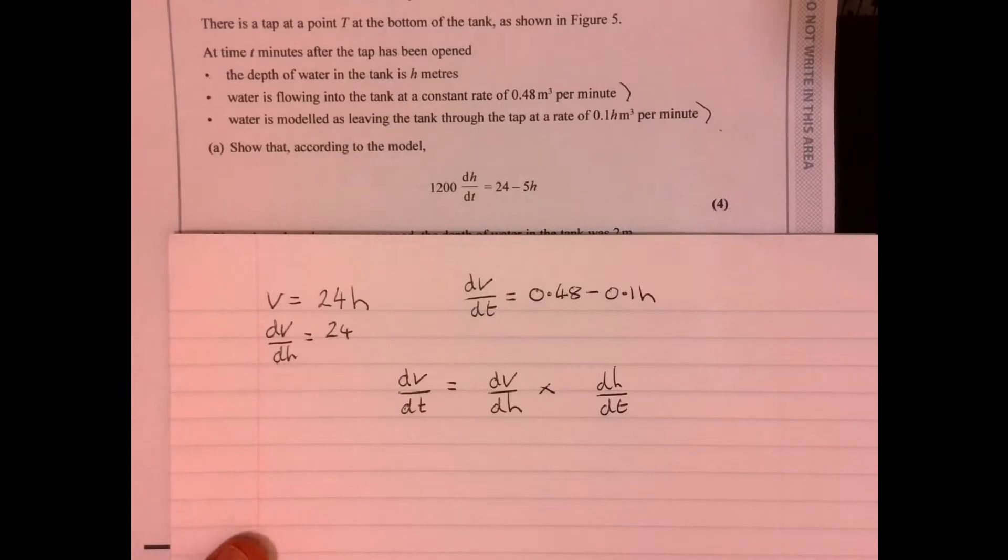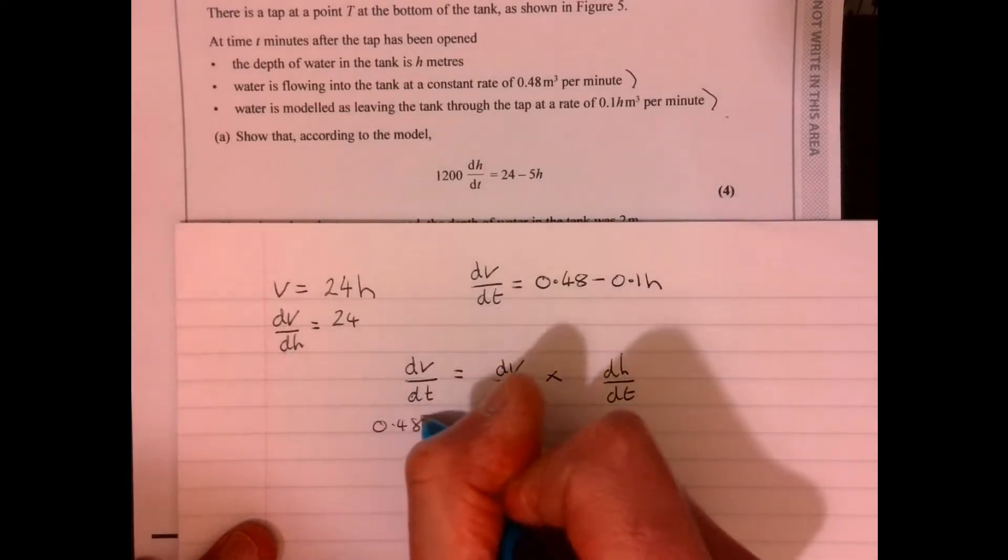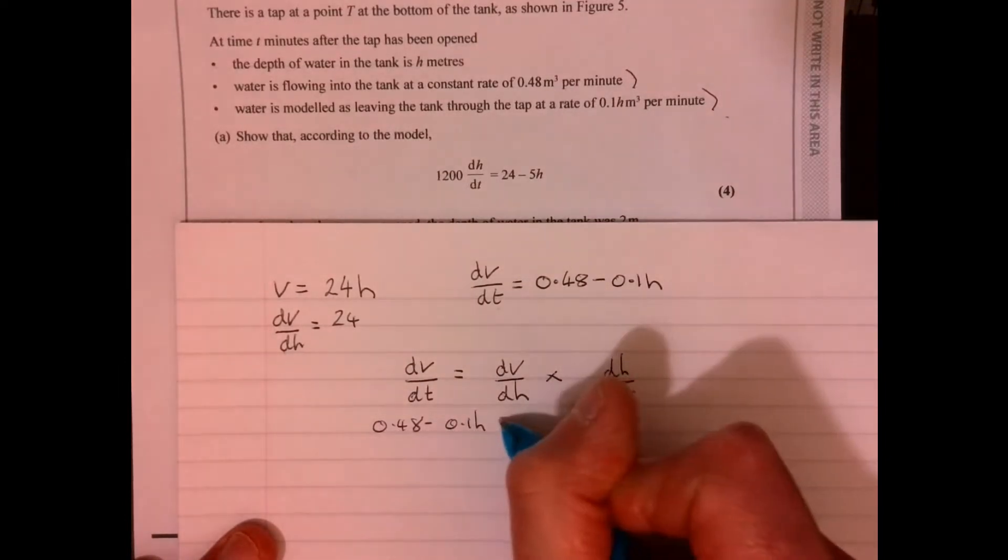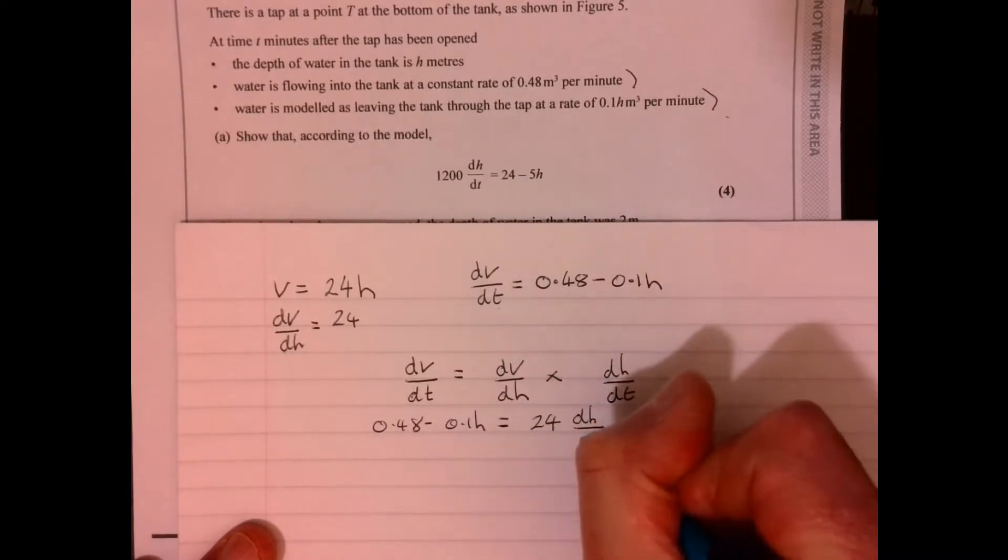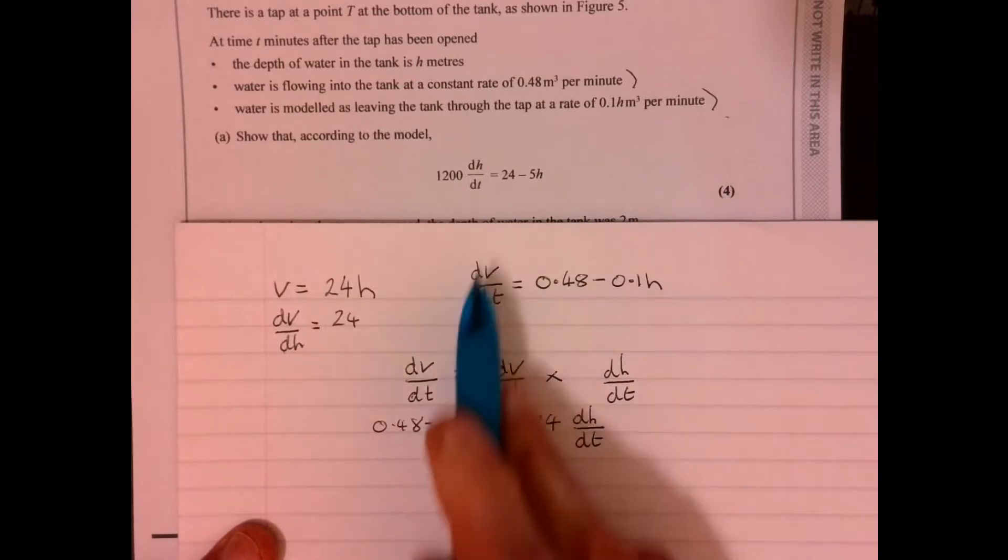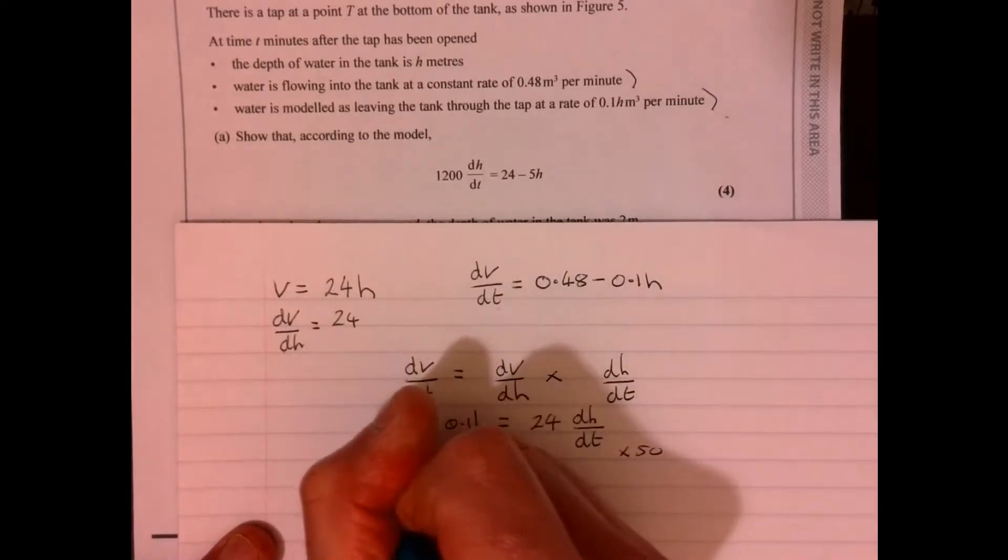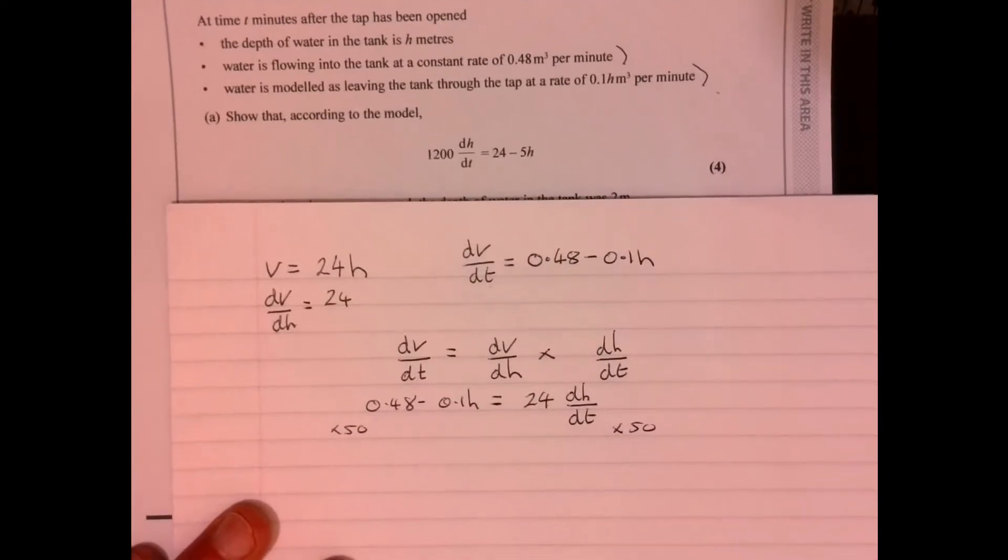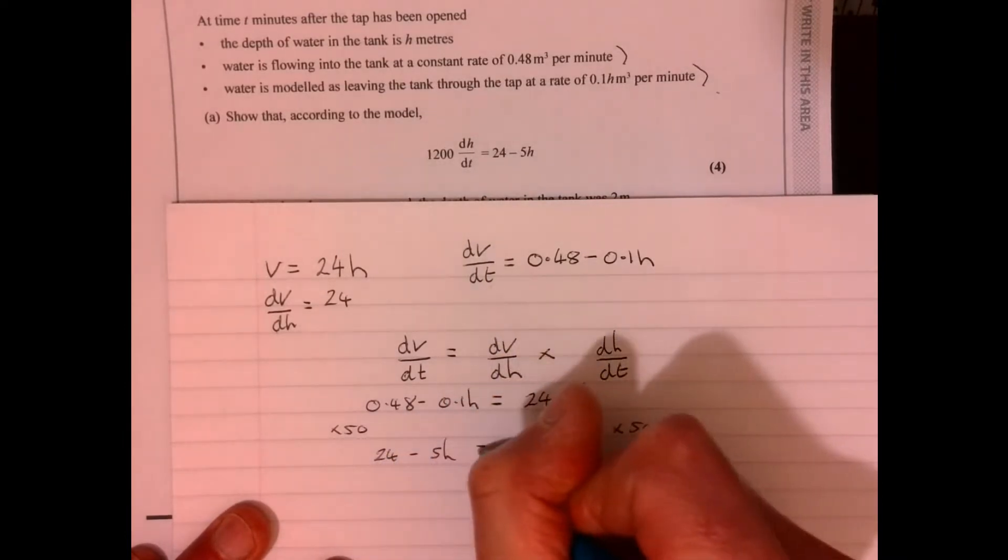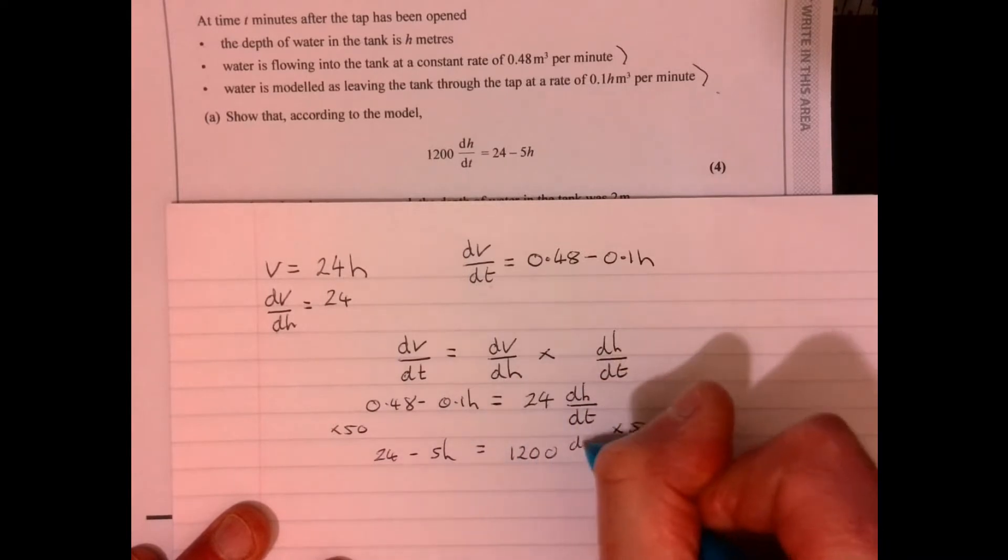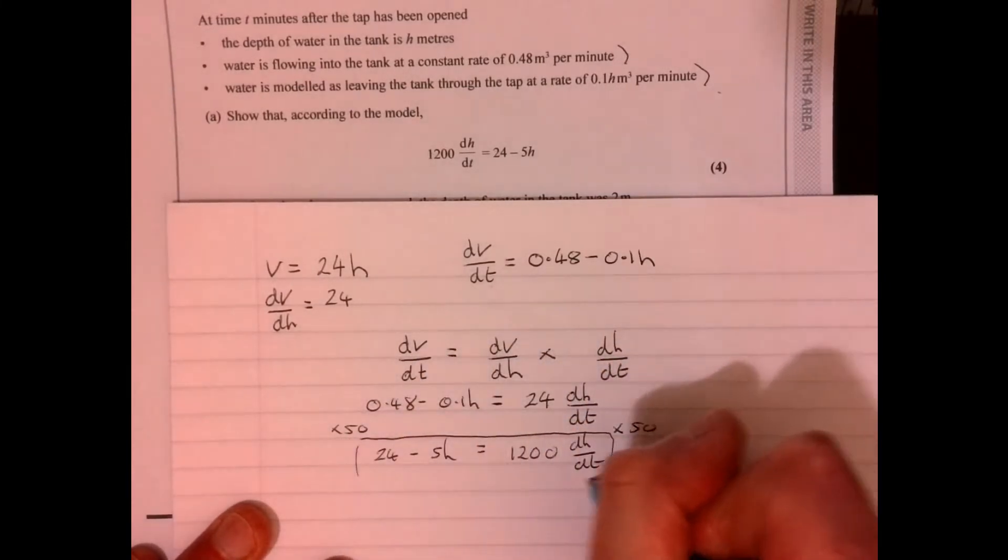So think about how we're going to get that from these things. If we were to combine these together, remember the chain rule just works a little bit like fractions. dv over dt equals dv over dh multiplied by dh over dt. They kind of effectively cancel out. So now let's fill in the stuff that we know. We've got 0.48 take away 0.1h equals 24 times dh dt. You could just leave it like that, but we've been told to get it like this. If you just multiply both sides by 50, then we'll come out with this. So we get 24 take away 5h equals 1200 dh dt. That's four marks just for doing that bit.